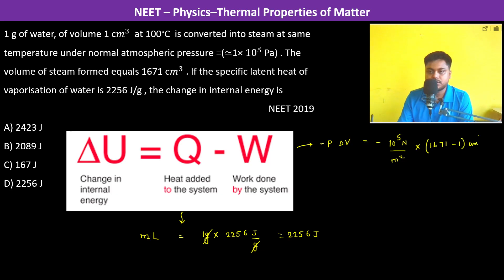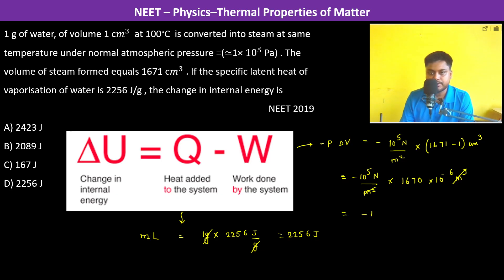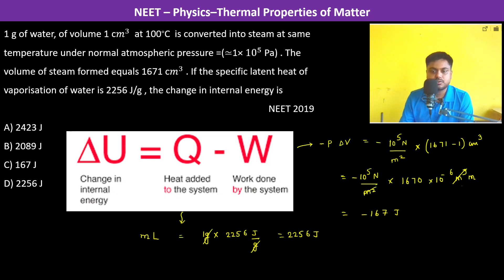Delta V equals 1670 centimeter cubed, which is 1670 into 10 to the power minus 6 meter cubed. So work done equals 10 to the power 5 Newton per meter square into 1670 into 10 to the power minus 6 meter cubed, which equals 167 joules. The units simplify as Newton-meter equals joule.